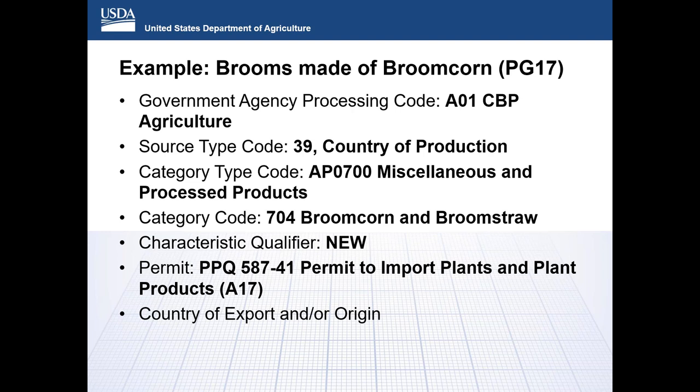Here is another example — brooms containing broom corn. The government agency processing code would be A01 for CBP Agriculture. The category type code would be AP0700 — a miscellaneous product — with characteristic code 704, broom corn and broom straw. Reporting category 704 does not require genus and species. PG-17 should be reported with the common specific name, in this case broom. The filer would still report PG-13/14 lines for the PPQ-587-41 — code A17 — permit to import plants and plant products. PG-19 and 20 for the LAP of the permit and ultimate consignee and customs broker or importer, PG-26 packing information, PG-30 arrival information, and PG-32 commodity routing information would still need to be reported.